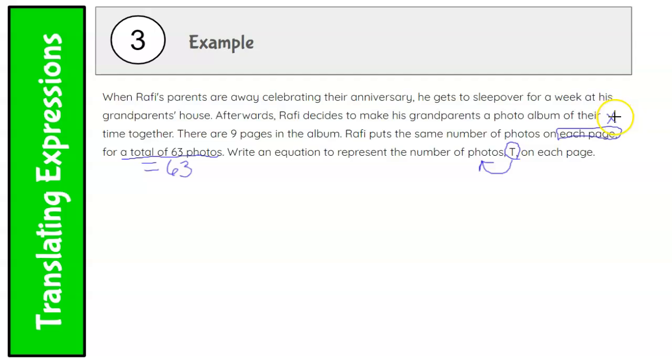So what is nine being multiplied by? That's right. Nine is being multiplied times the T. It says nine pages. There's the same number of photos on each page. So I would take nine times the number of photos on each page, which I made represent T. Nine times the number of photos on each page equals a total of 63 photos. That's it. See? Not so bad.